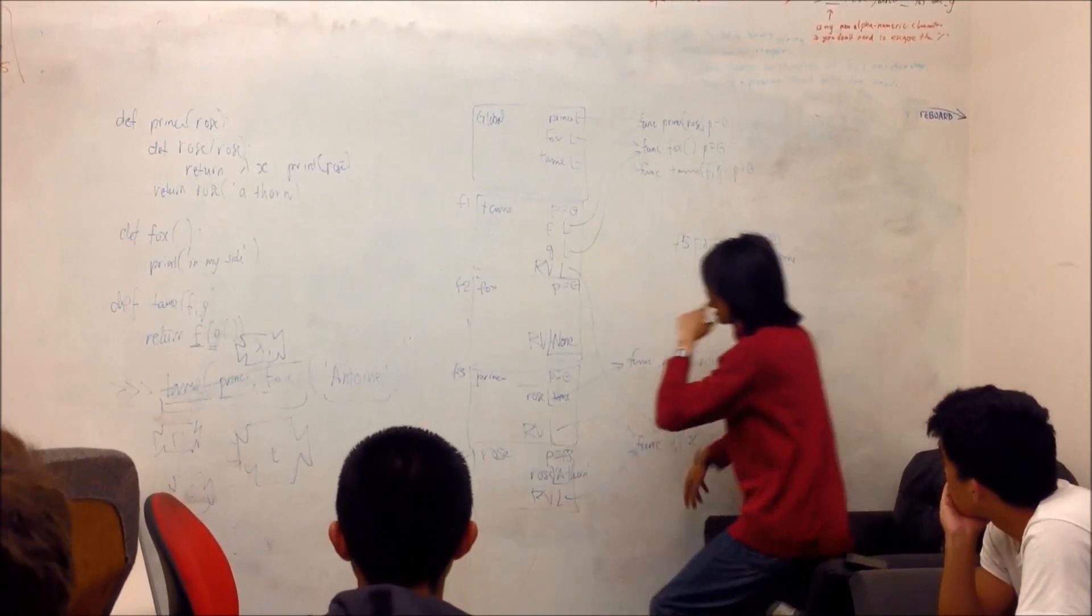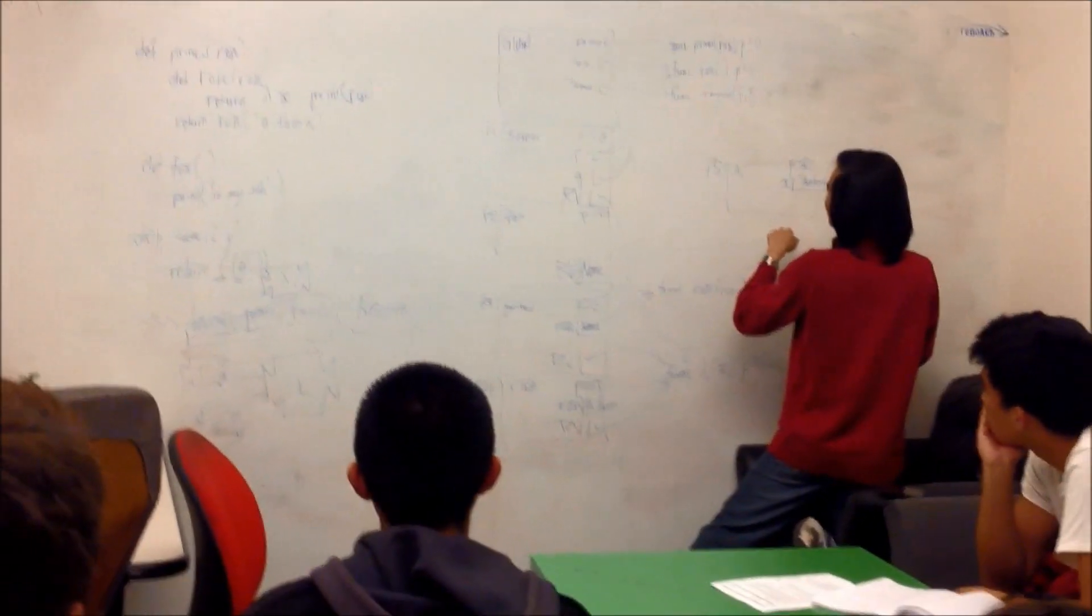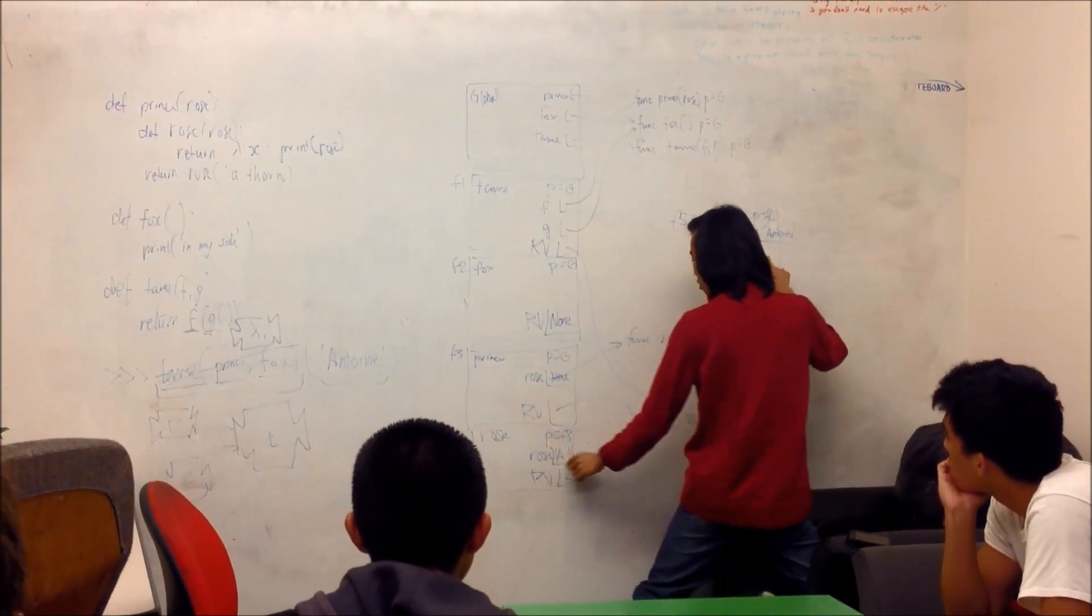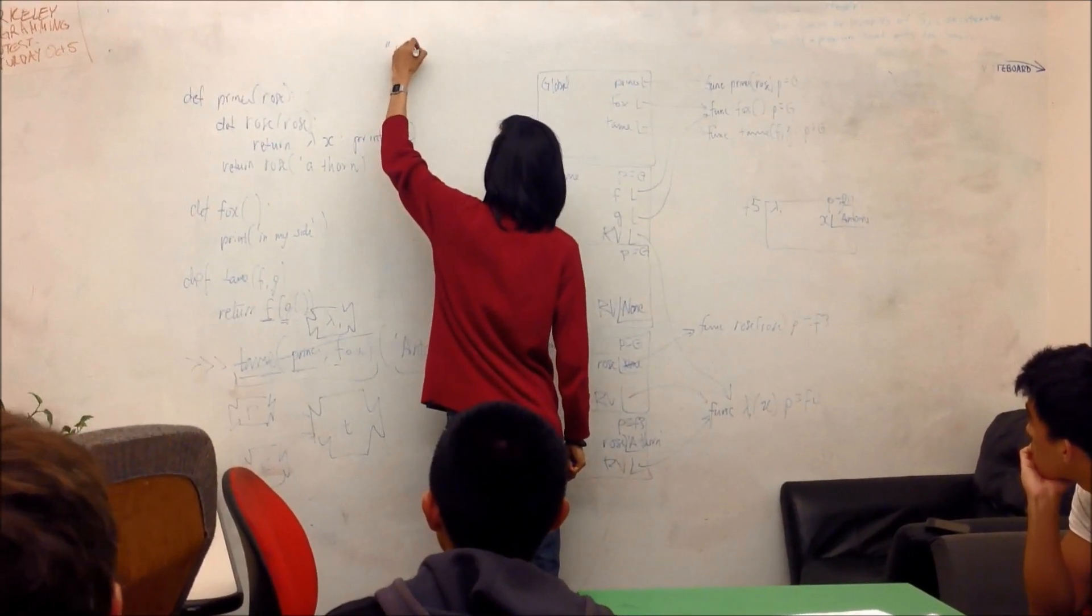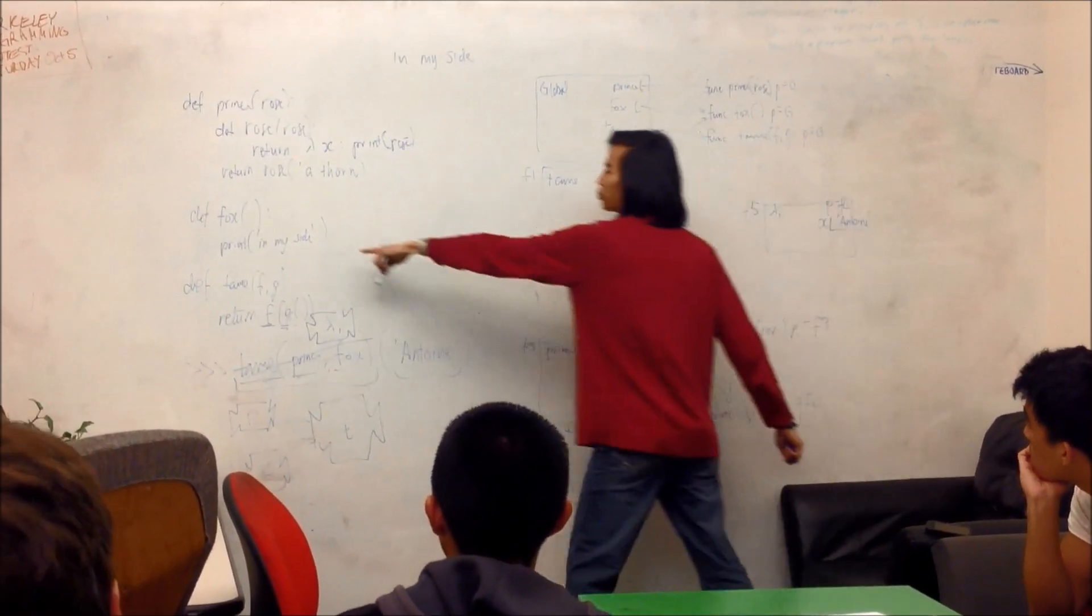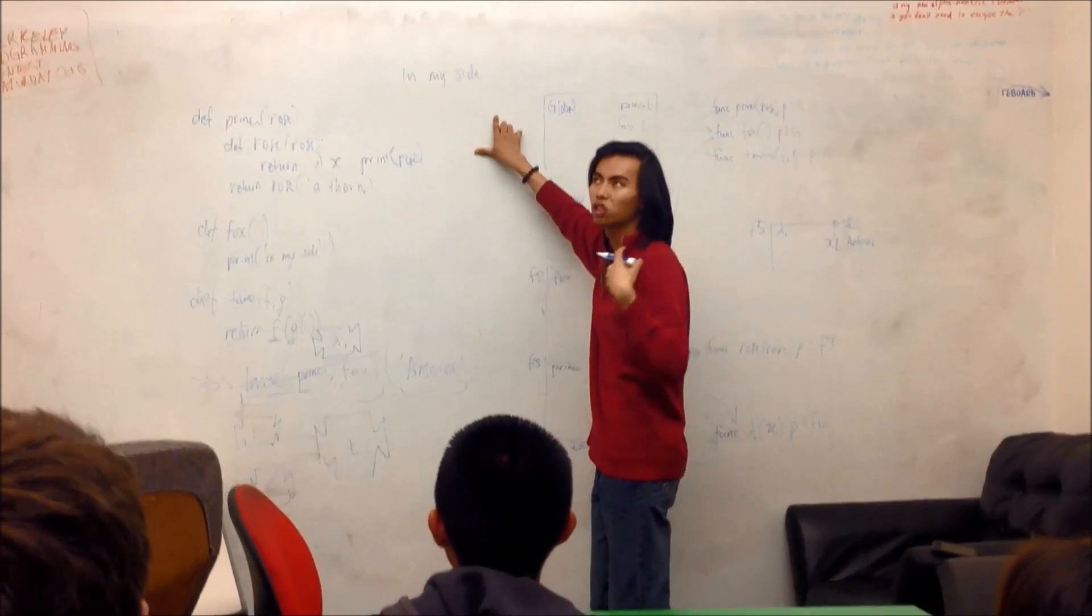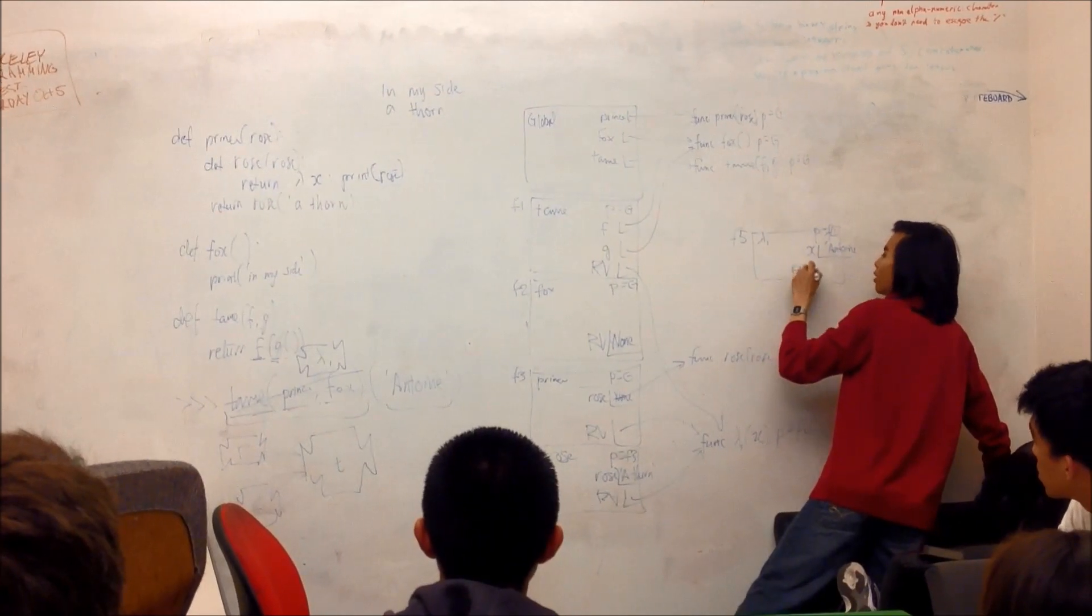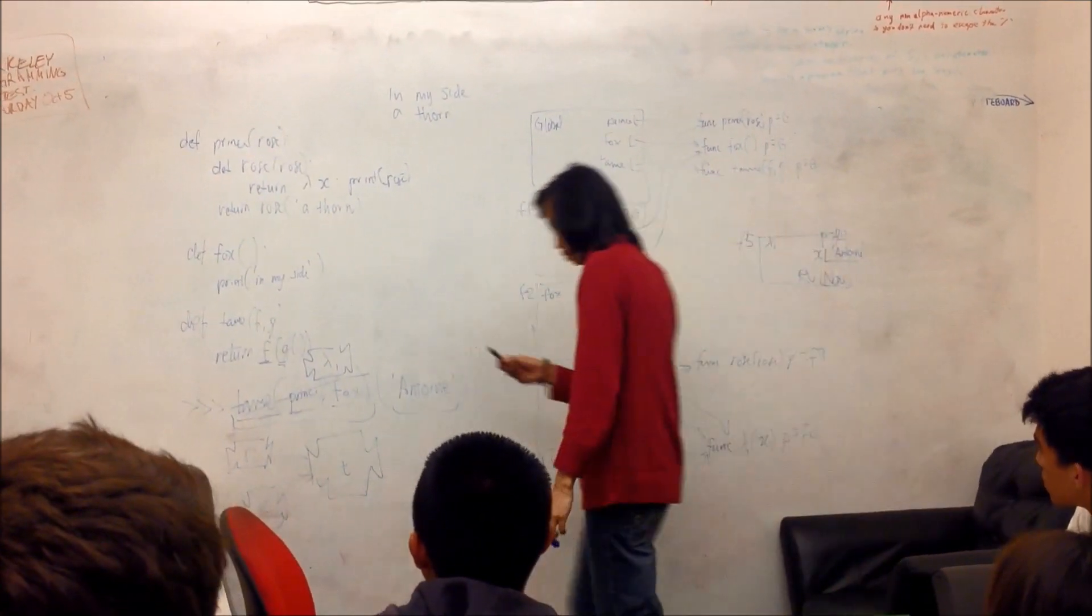And it doesn't really matter. Because the lambda says, I'm just going to print rose. Now, printing rose means that we have to figure out what rose is. We're at F5 right now. We have no rose in this frame. So we follow the parent to F4. Whose rose is a thorn. So if you're keeping track at home, first thing we printed way long time ago was In My Side. So In My Side has shown up on the screen. It was when we called fox and fox said print In My Side. We did that a long time. In Python, we have to show that. We want to show what the output is. And then we just wrote a thorn on two separate lines. And then the return value here is none. Because the lambda says return whatever print returns and print returns none. Which means we're done.